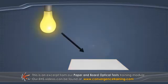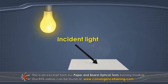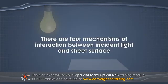The light that strikes the surface of a sheet is called the incident light, and there are four mechanisms of interaction between incident light and the sheet surface.